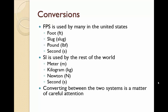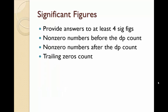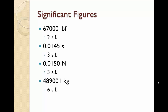For answers in METC 111 I'm very concerned about significant figures, as this will help me figure out if you've understood the concepts. All answers must be reported to at least four significant figures regardless of the input. Nonzero numbers before and after the decimal point count, and trailing zeros after the decimal point count as well. For example: 67,000 pounds-force has two significant figures; 0.0145 seconds has three significant figures; 0.0150 newtons has three significant figures; and 489,001 kilograms has six significant figures.